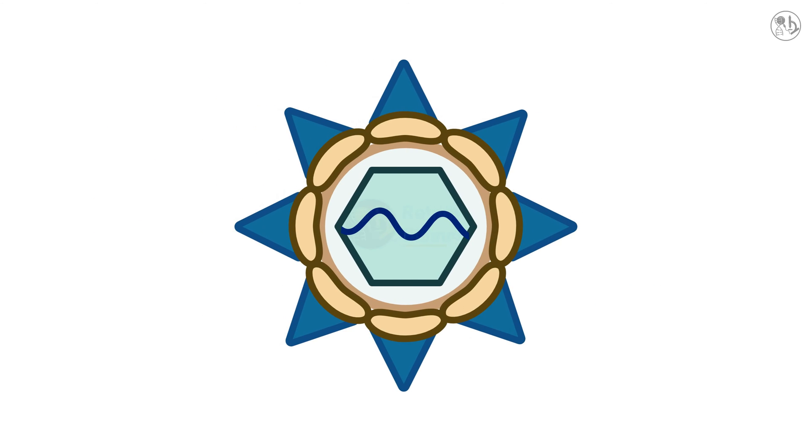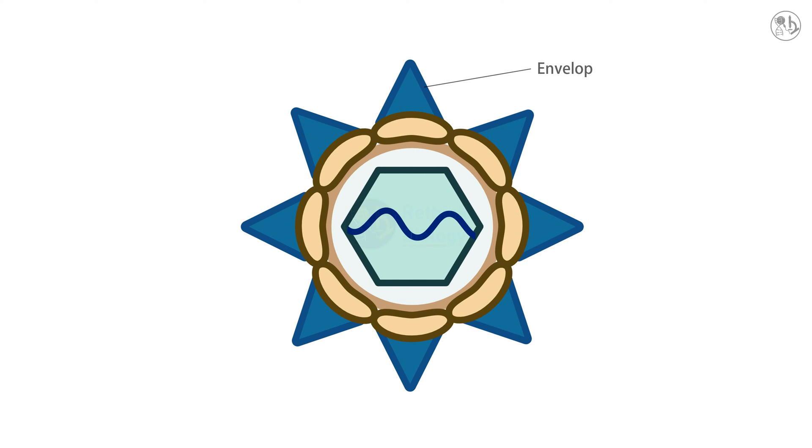The dengue virus is a spherical virus that has a protein coat called the envelope and a core of genetic material called the RNA. The envelope has two types of proteins: envelope protein E and precursor M protein prM.